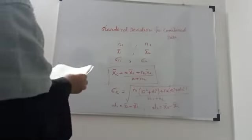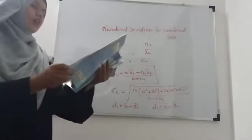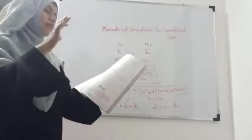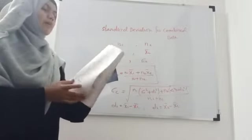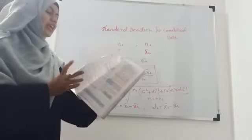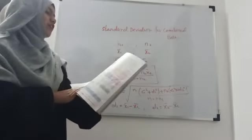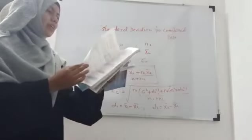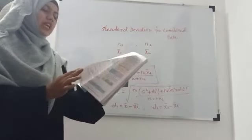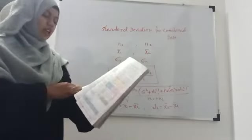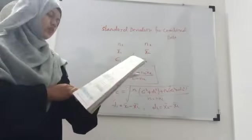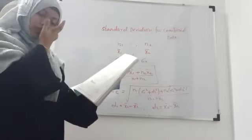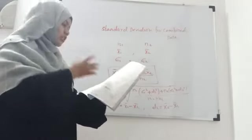We have some examples based on combined mean and combined standard deviation that we will see in the next class. Also, one more topic remaining from this chapter is the coefficient of variation, which we will also do in the next class.